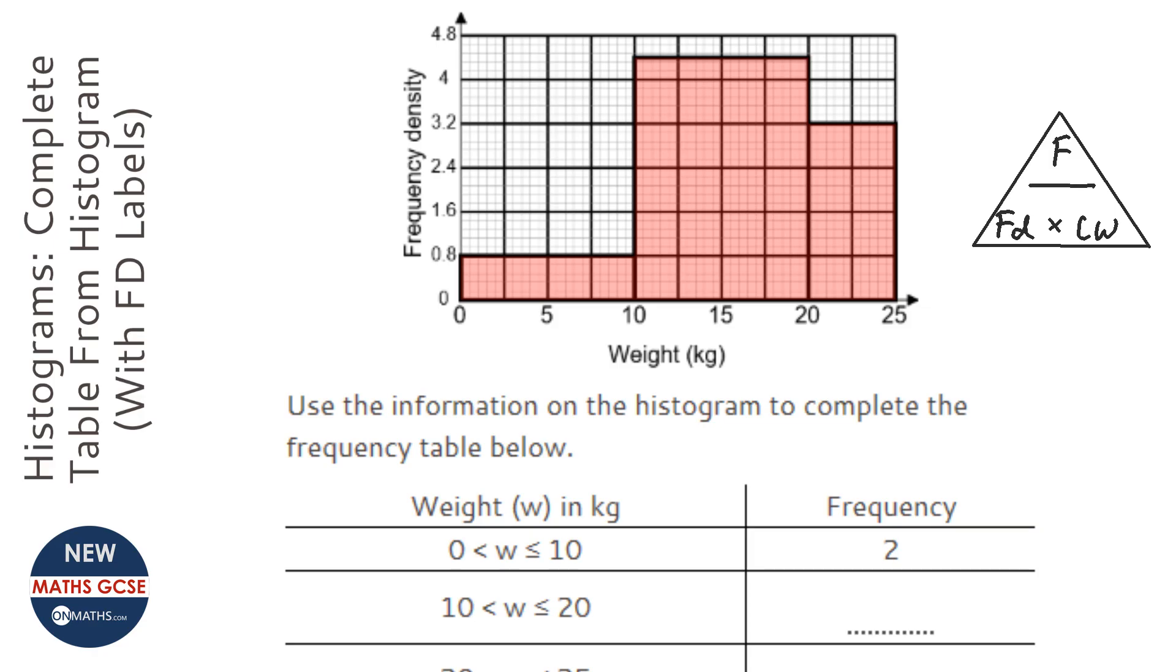Be careful - the frequency is proportional to the frequency density times class width. Always check to see whether the example given to you works. The class width is 10 for this first one.